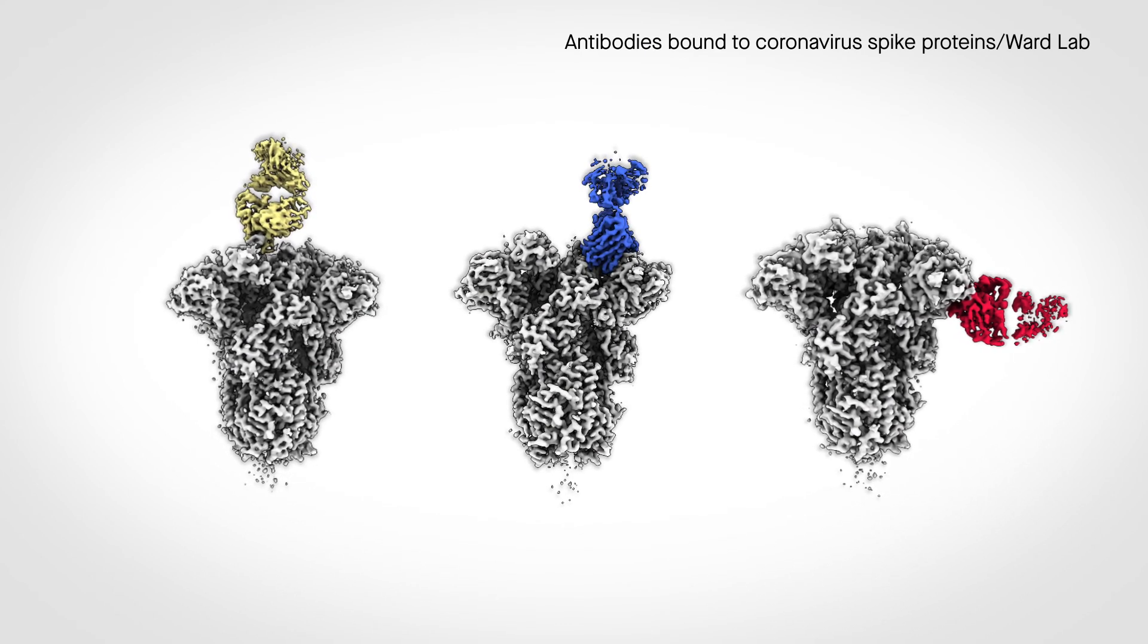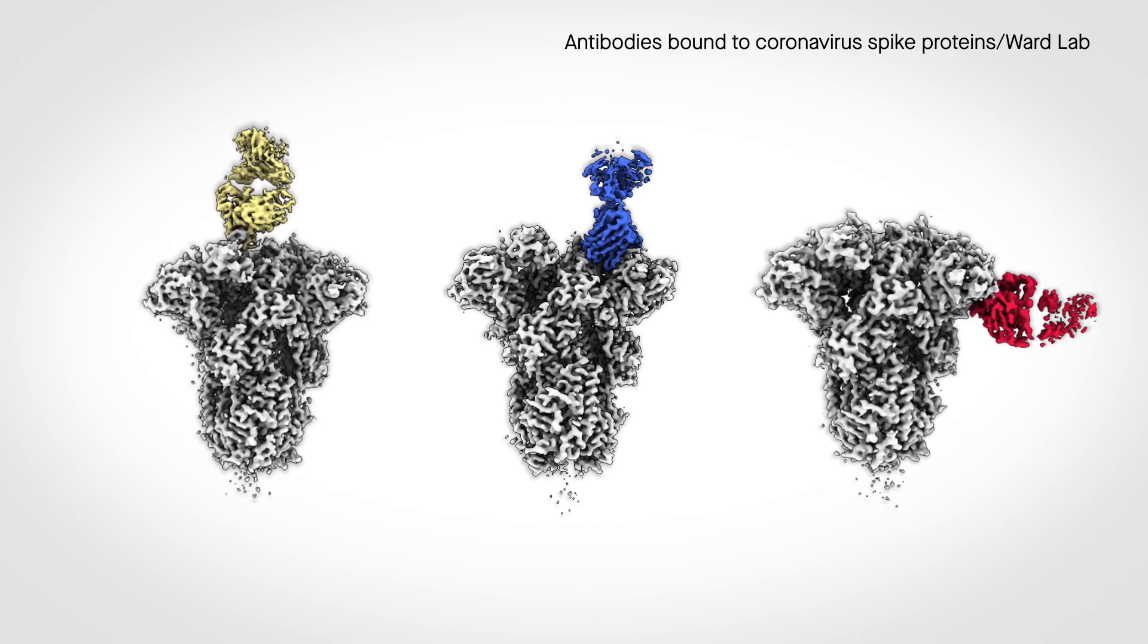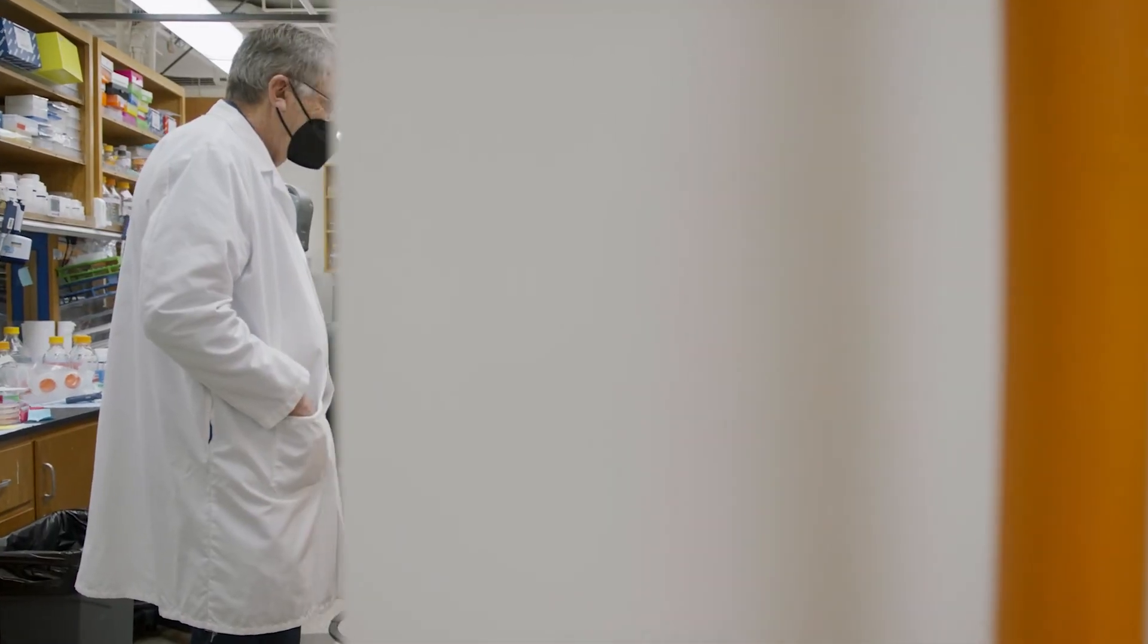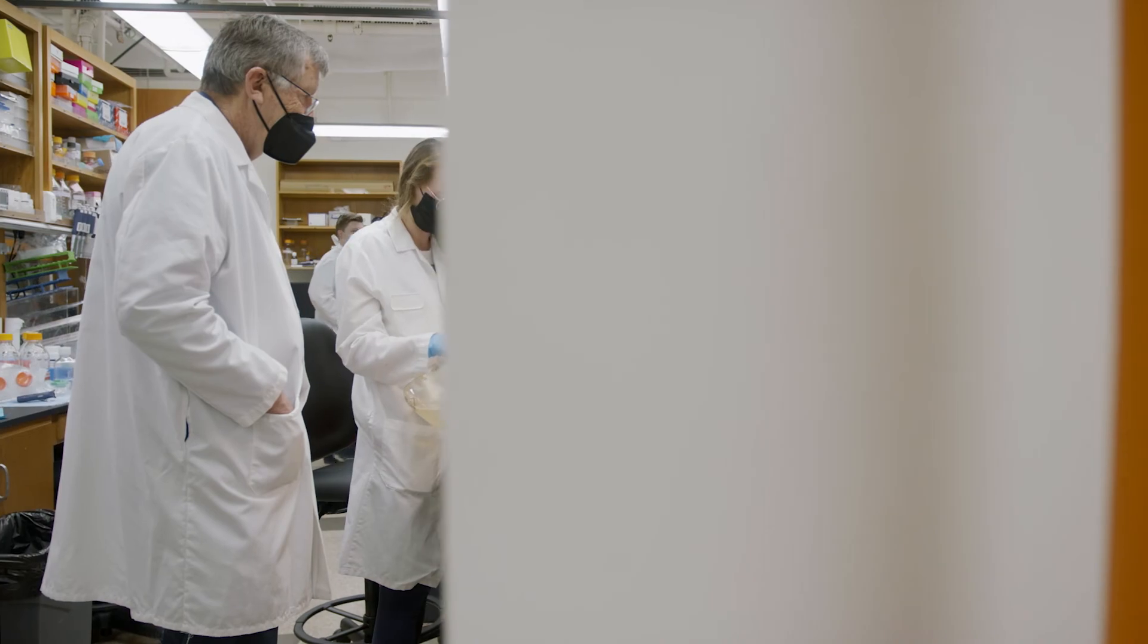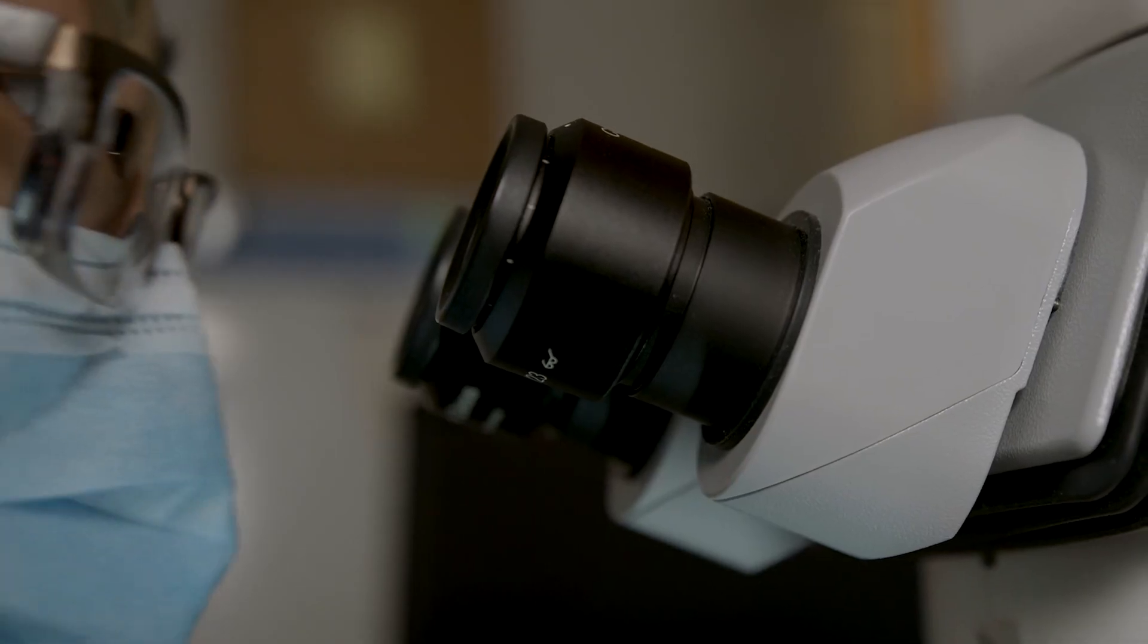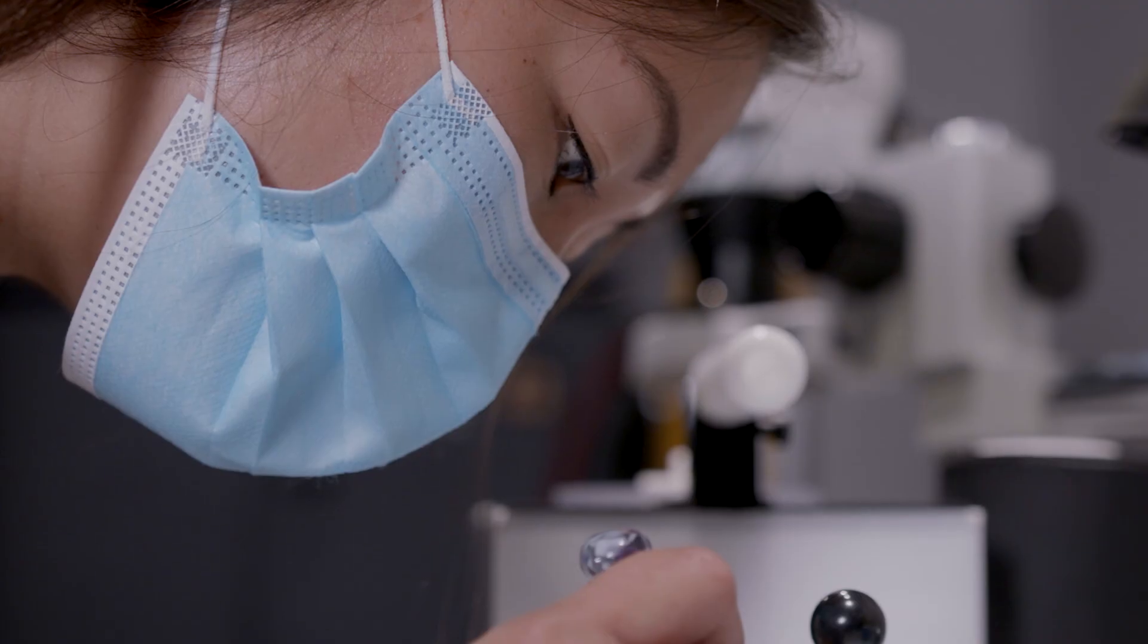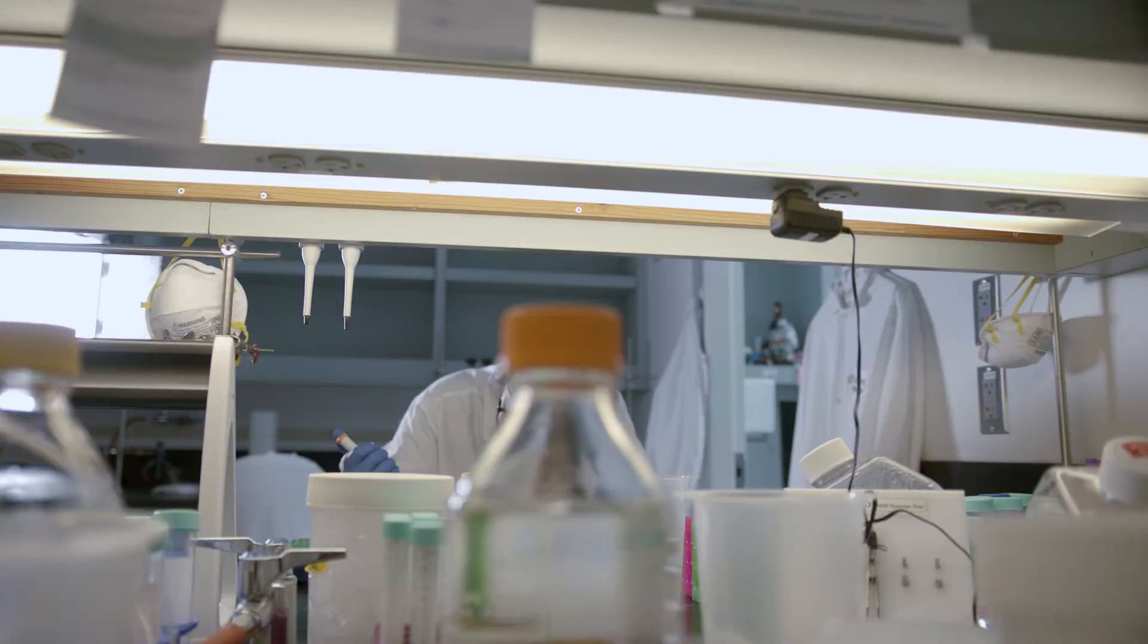One of the great viral strategies is changing shapes, is mutation. Inducing those sorts of antibodies often requires some special tricks, and those are the sorts of tricks that we're learning now. So increasingly we can think that universal vaccines are feasible.